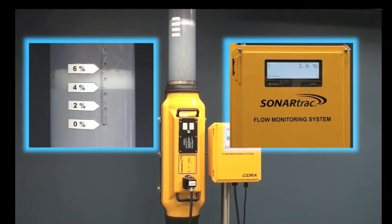You will notice that the transmitter reads 3.8% and the column also indicates 3.8%.